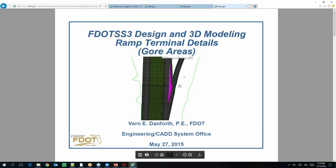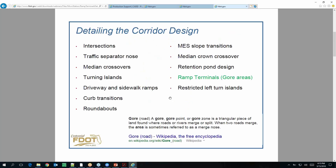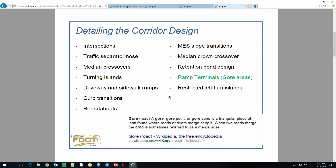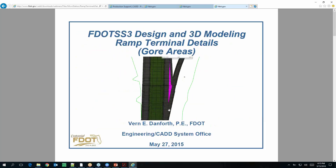Urban driveways — we just pretty much went through. Gen files — might as well delete that, we don't create those anymore. Ramp terminal details talks about how you model this. You've got your main interstate or limited access facility, you're going to create a ramp, at some point it becomes independent. The template is a normal template back here, and when you get to this point it has this whole widening pavement for the ramp. It widens out based on as the ramp baseline — which is a point control — pushes out, then it pulls this out to a certain extent.